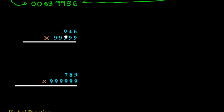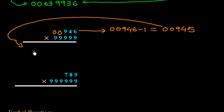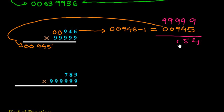One more example: a three-digit number multiplied by a five-digit series of 9s. We add two zeros to make it 00946. Subtract 1: 00946 minus 1 equals 00945. Write 00945 on the left side. Subtract from 99999: we get 9 minus 5 is 4, 9 minus 4 is 5, 9 minus 9 is 0, 9 minus 0 is 9, 9 minus 0 is 9, giving 99054 on the right side. The answer is 94599054.